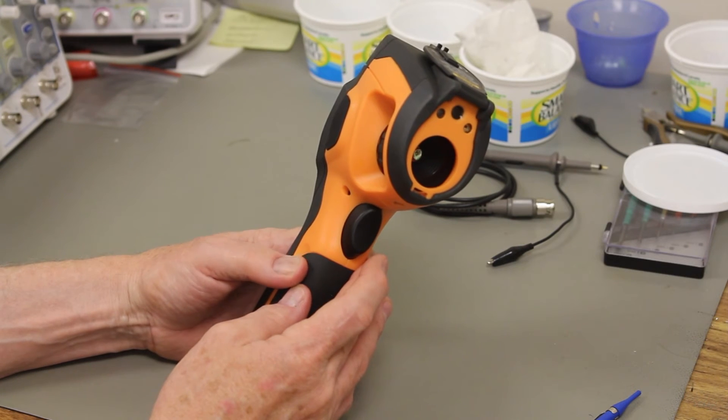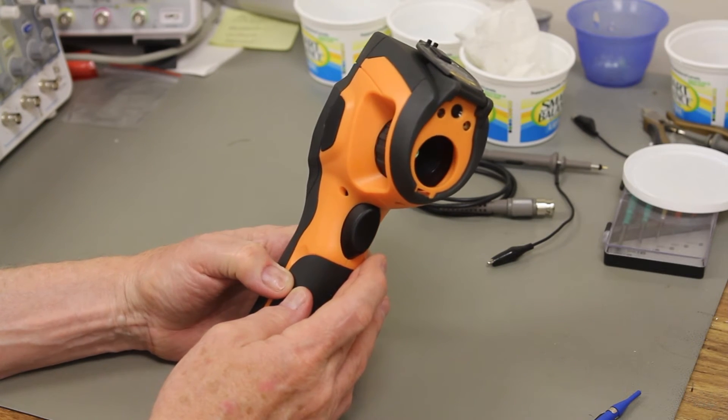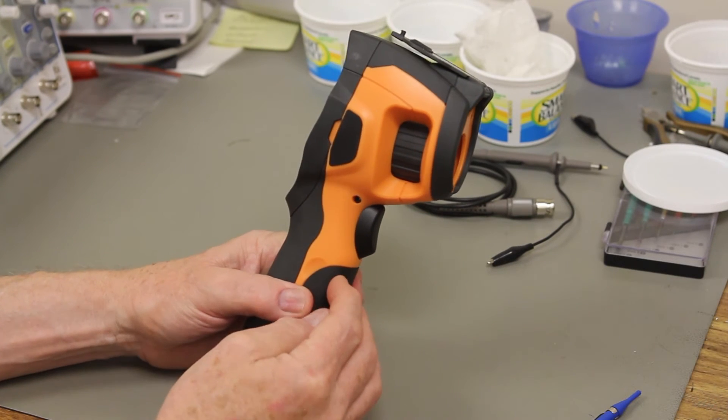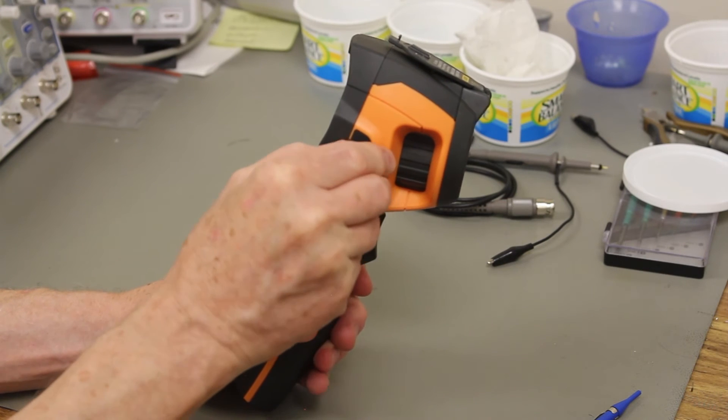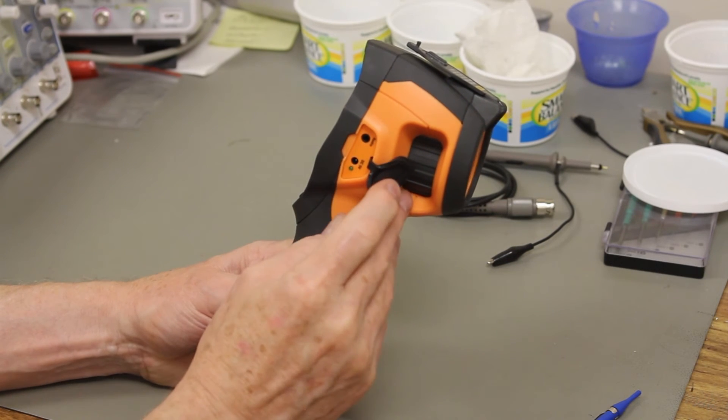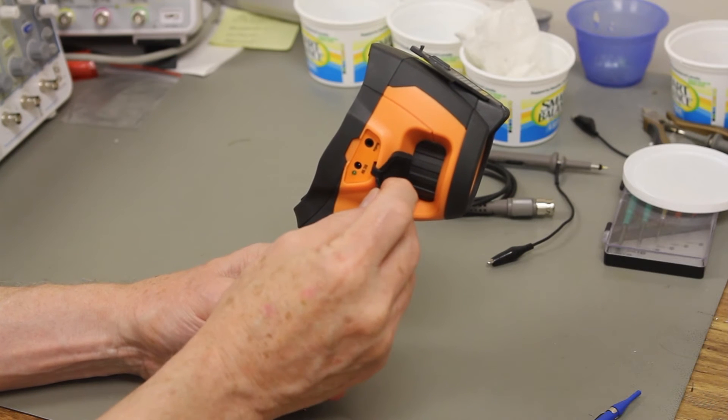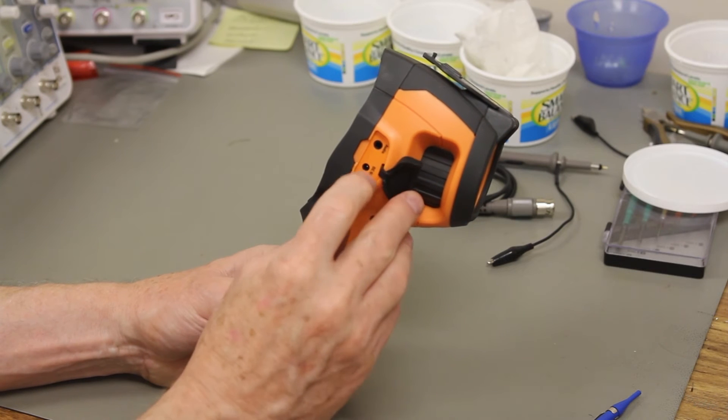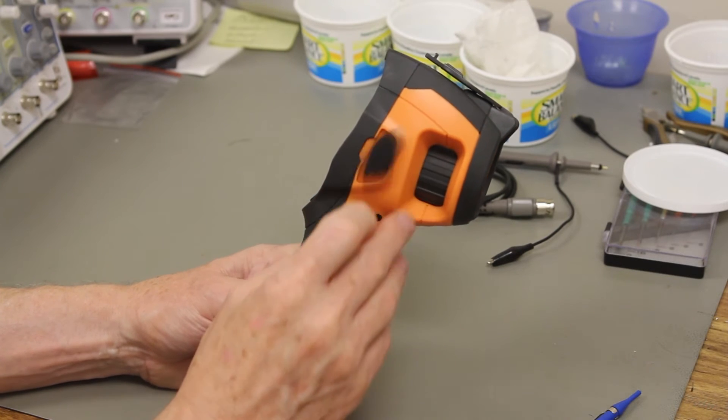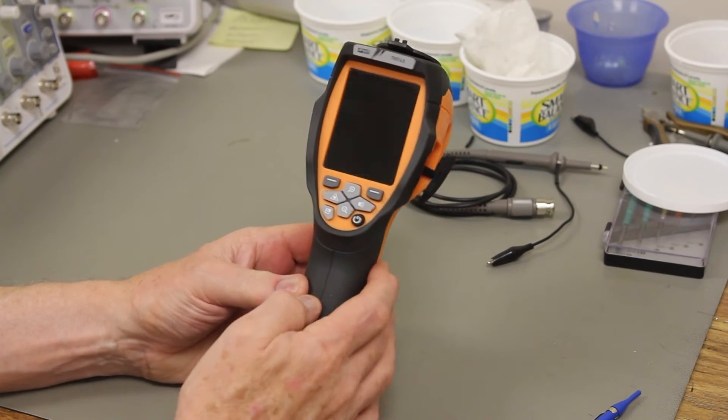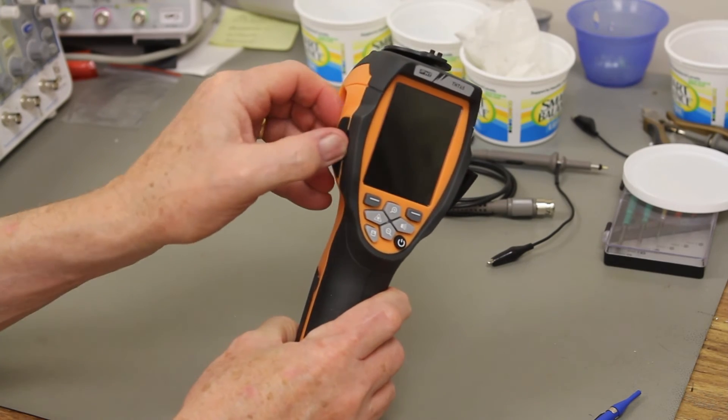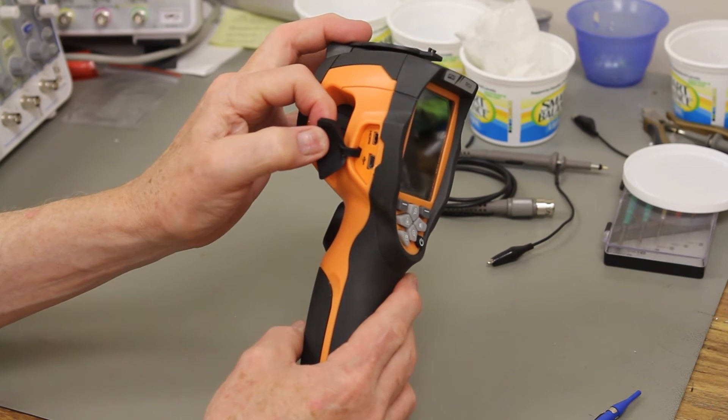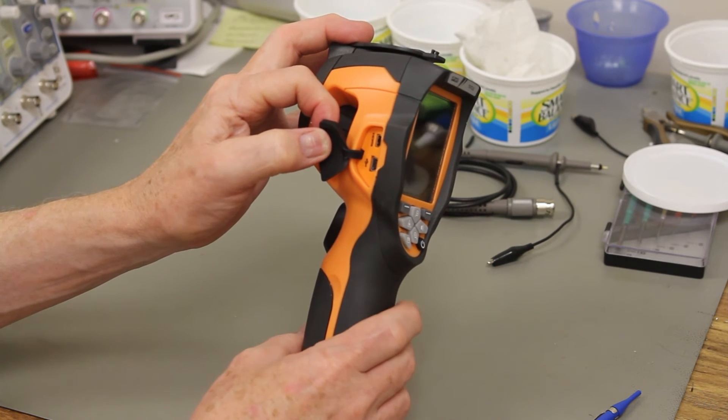Then on each side of the unit there's a couple of little ear flaps that come out. Here's one. And this is for your audio which includes earbuds and a microphone and your battery charger inlet. And then on the other side we have another ear flap that comes out. And there's an HDMI connector and a USB device connector.